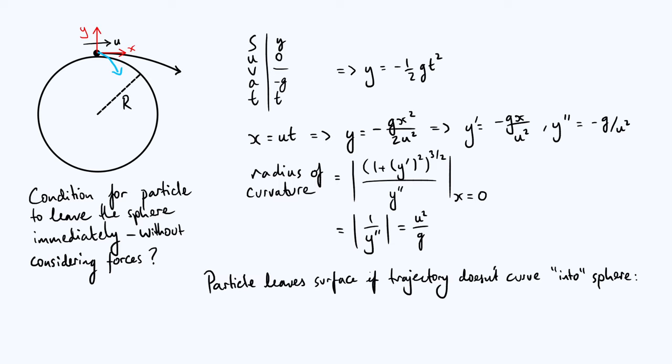And that fact leads us to the key insight that the particle will immediately leave the surface of the sphere, if and only if the trajectory doesn't try to curve into the sphere. In other words, it will leave the surface if the trajectory looks more like this black curve there than this blue curve here.